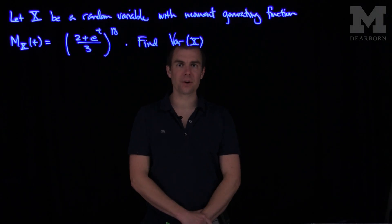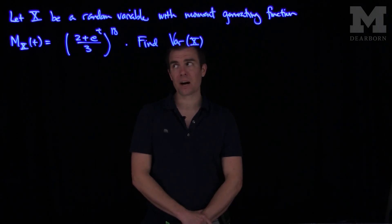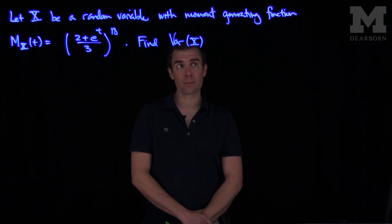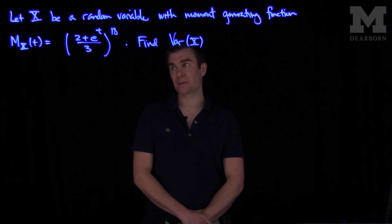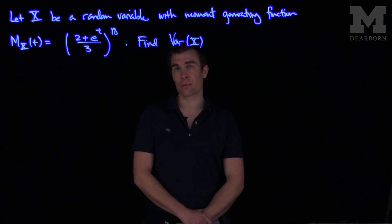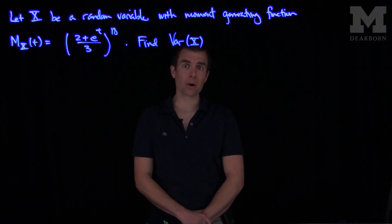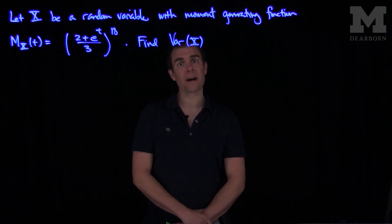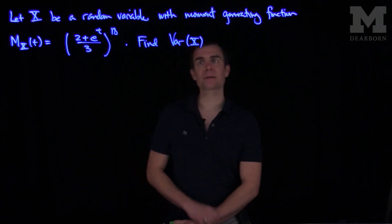Hello students. In this video, we'll see the solution to the first problem of the quiz. In this problem, we're letting x be a random variable with moment generating function mx of t is 2 plus e to the t over 3 to the 18th power. We're asked to find the variance of x.